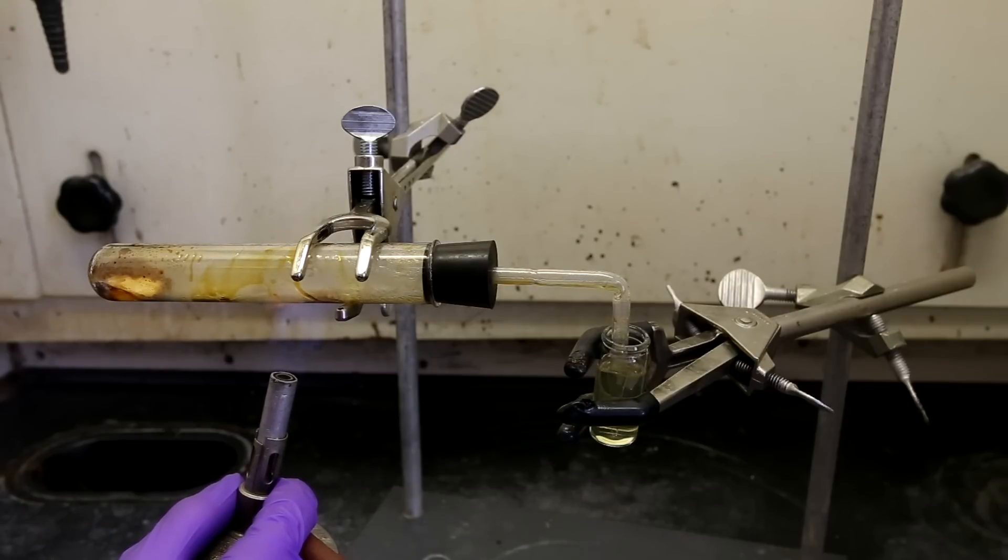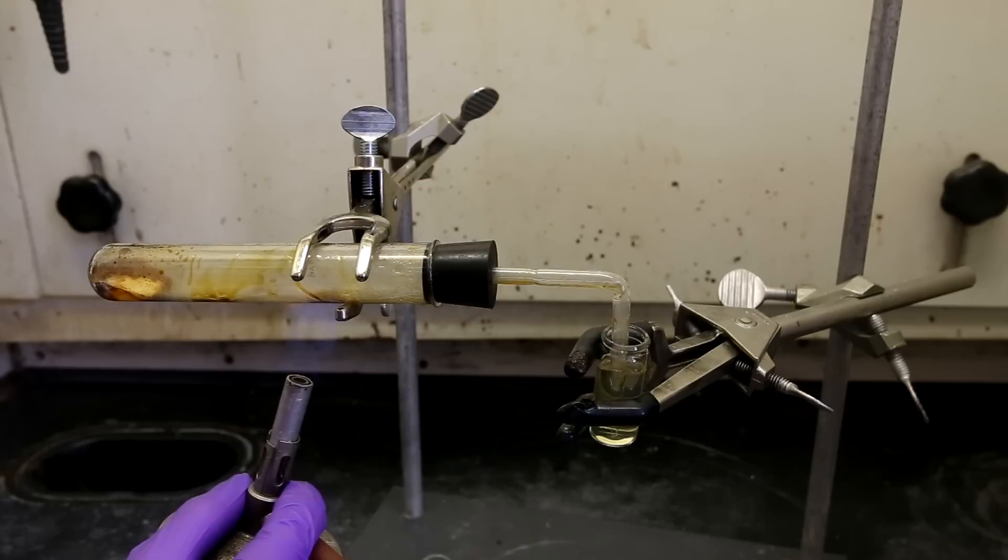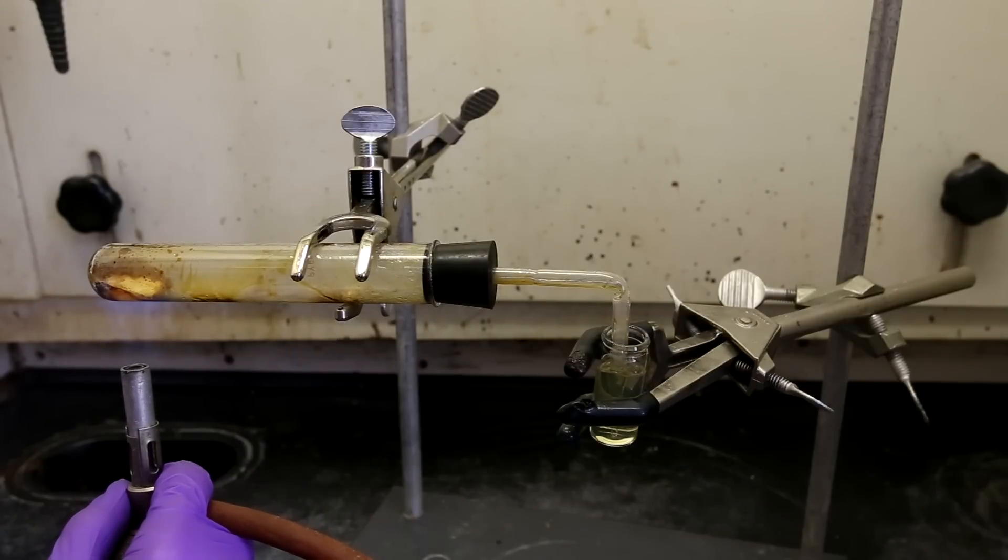In almost every case of destructive distillation, this is completely undesirable. The easiest way to avoid suck back is to remove the dram vial before you remove the heating. This way the suck back will occur but it will only pull in air and not your water solution.